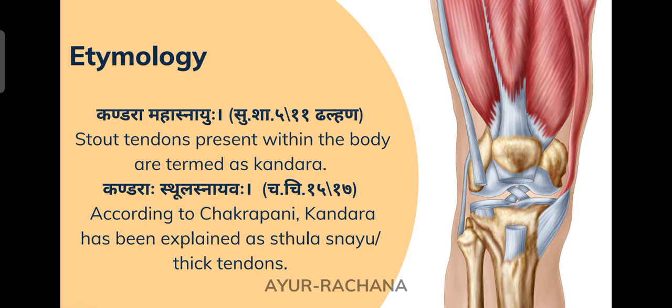In the second reference, Kandara Thulasnayavaha, the term Thula also refers to the stout or bigger one. So bigger Snayus or Thula Snayu are called Kandara. These are the basic definitions under Paribhasa Charira, taken from commentaries — Delana's commentary on Susruta Samhita and Chakrapani's commentary on Charaka Samhita.